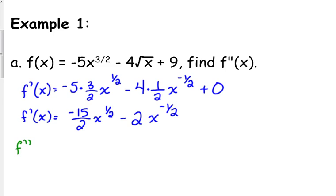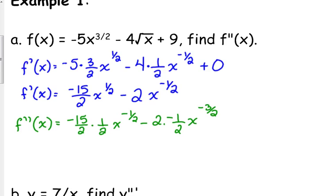So then in the second derivative, we're just going to apply our exact same derivative rules. We're just going to do them again. So negative 15 over 2 times 1 half x to the negative 1 half minus 2 times negative 1 half x to the negative 3 halves. So final answer, f double prime of x is equal to negative 15 over 4 x to the negative 1 half. I'm going to leave it like that because it started in rational exponent form. Negative 2 times negative 1 half is positive 1, so that's plus x to the negative 3 halves.